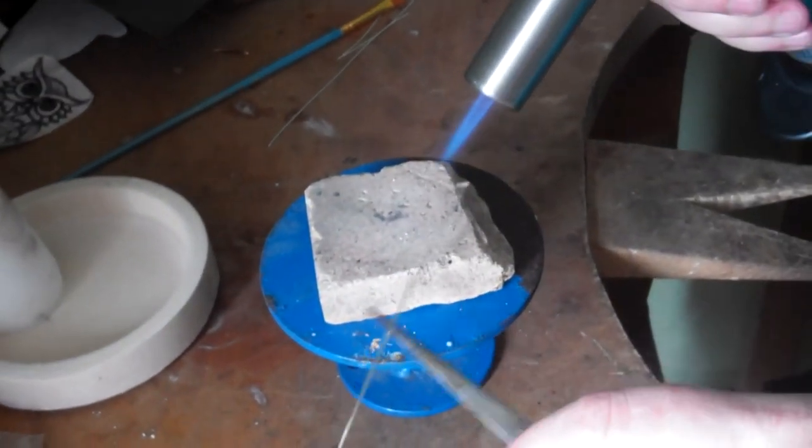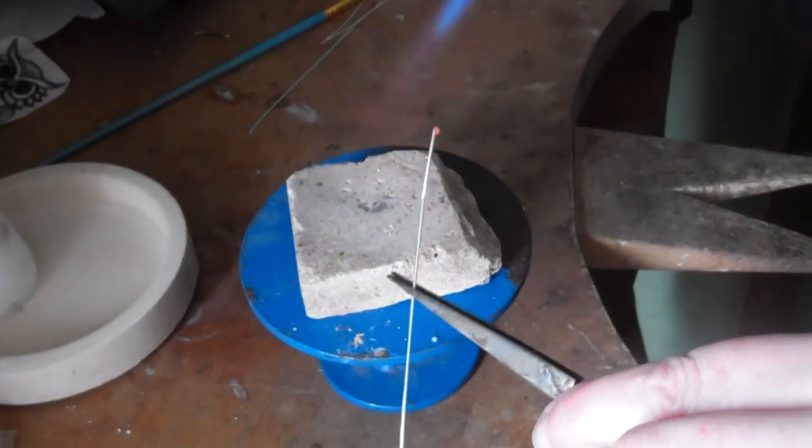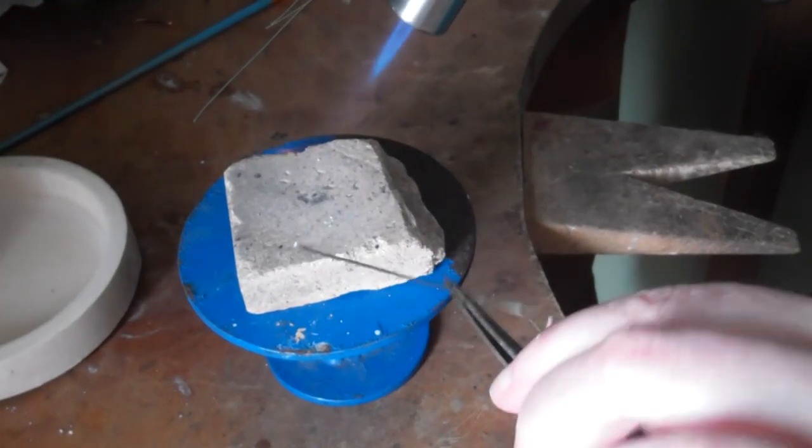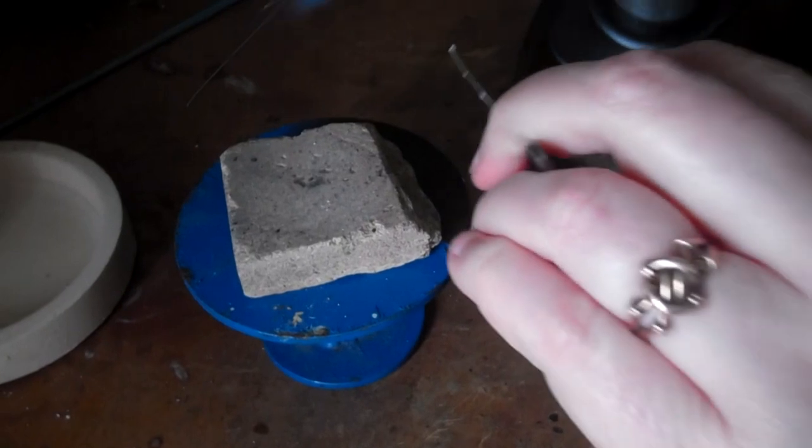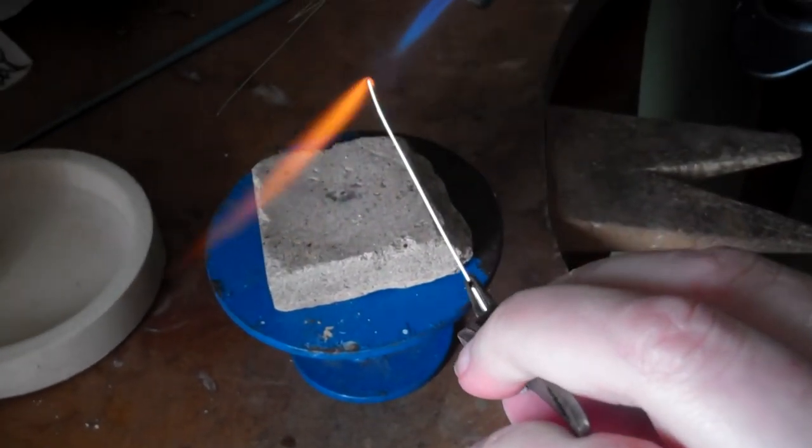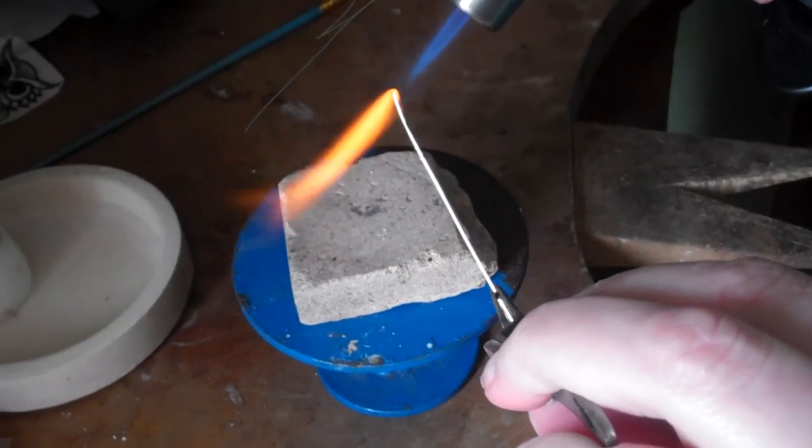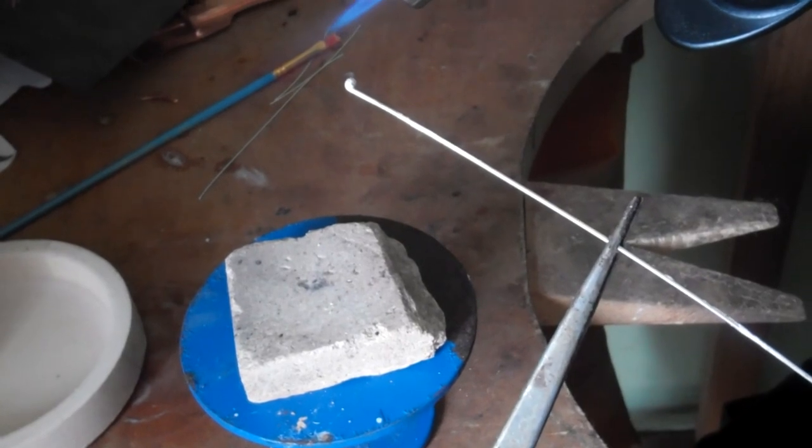And then with the wire pointing upwards and just below the blue point—can you see it's already gone? Just below the blue point of the flame. You just move that, it's just moving slightly. In you go, and just warm. And there, it's gone. It's that easy to ball wire.